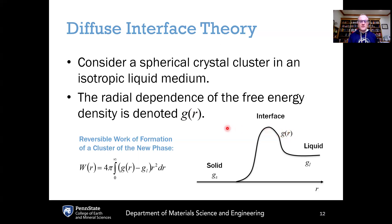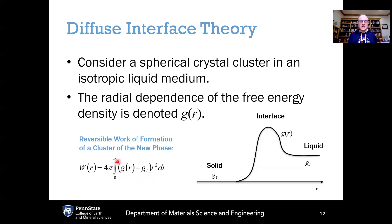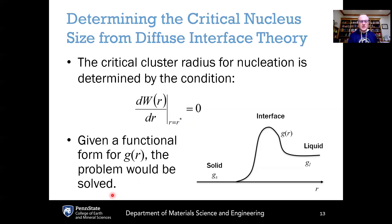Once we define this g(r) function, we can calculate the work of formation of a cluster, W(r), by simply integrating that function radially. It's the integral from 0 to infinity of g(r) minus g_l, multiplied by the surface area of the sphere, 4 pi r squared, then integrated over r. That gives the work of formation of our cluster for that particular size.